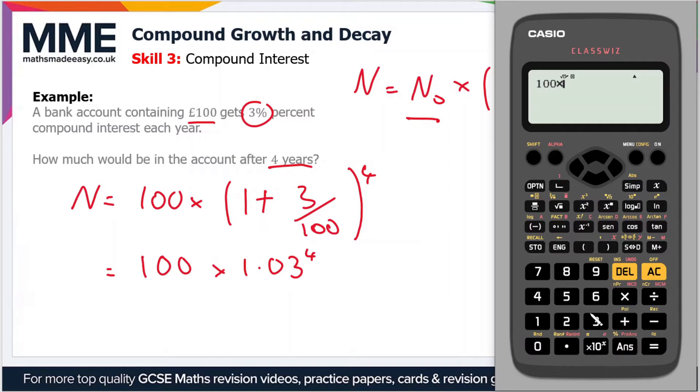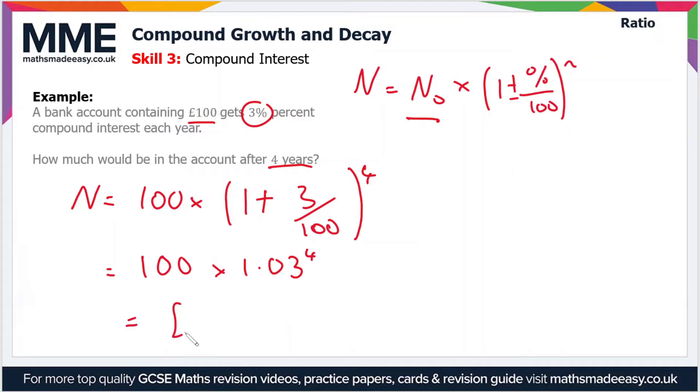So that gives us a value of £112.55. So after 4 years, £112.55 will be in the bank account.